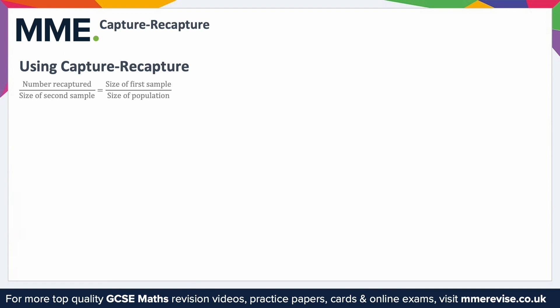The key equation for Capture Recapture can be seen here. It's the number recaptured over the size of the second sample is equal to the size of the first sample over the size of the population. This can be simplified down: m over n is equal to M over N.